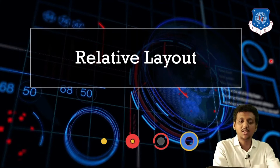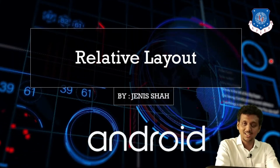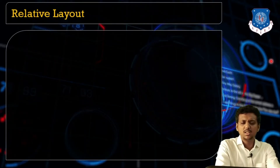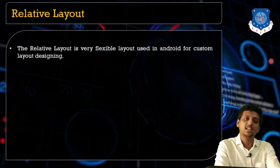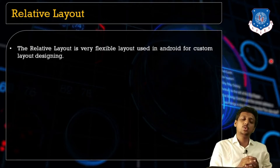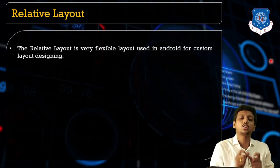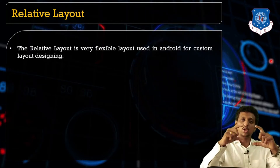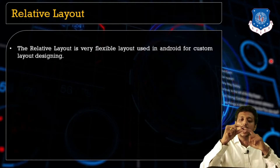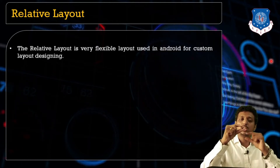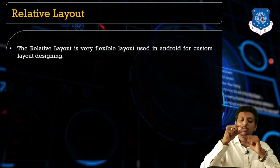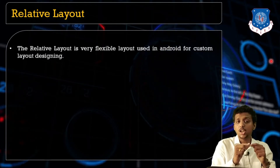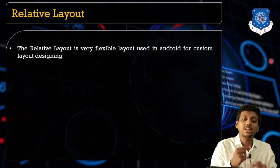Hi everyone, this is your instructor Janice Shah. Let's begin with the Relative Layout. The very first point to understand is that in a Relative Layout, we arrange view components relative to another component. If I place one component in the layout, I need to specify for the second component whether it should be on the top, bottom, right side of that component, or on the right side of the parent, bottom of the parent, and so on.